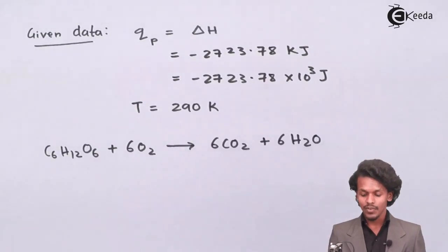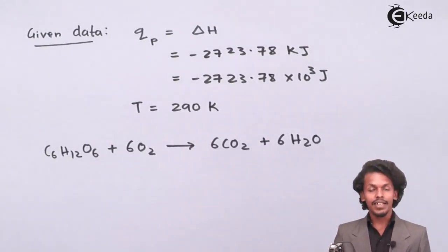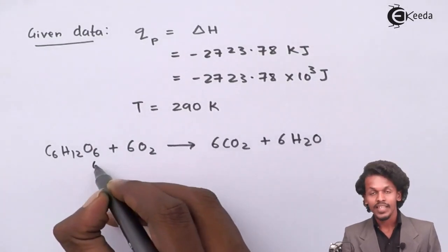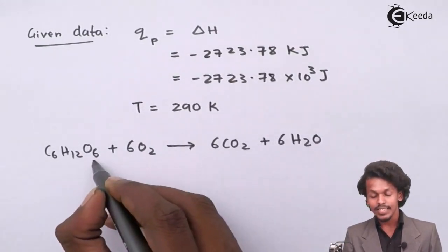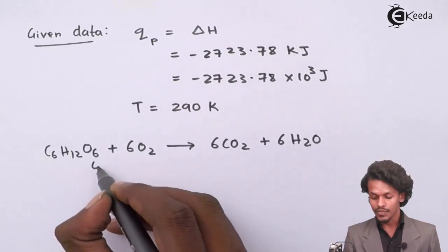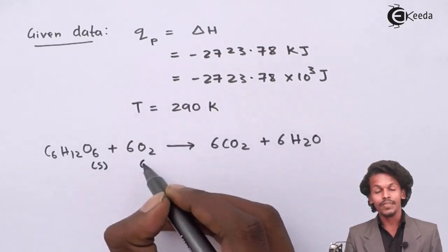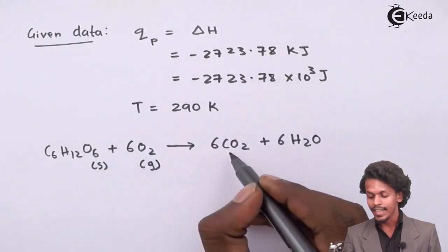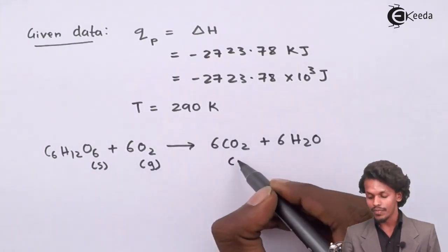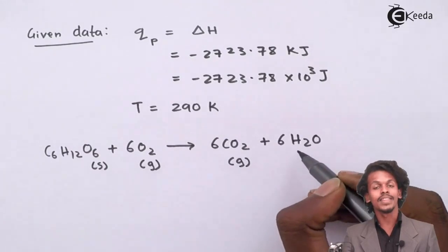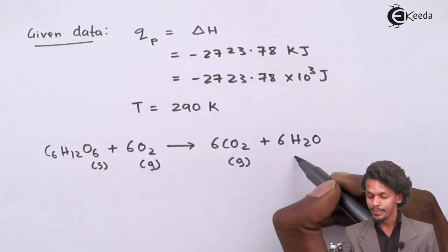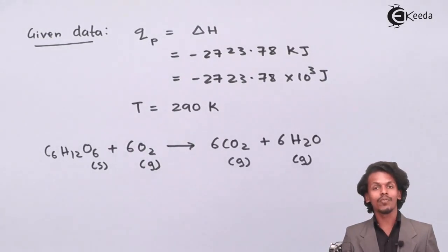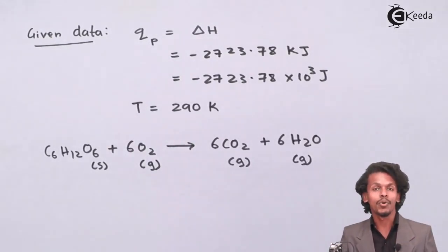Regarding the states: glucose is in the solid state, oxygen is in the gaseous state, carbon dioxide is in the gaseous state, and H2O in this case also appears to be in the gaseous state. From these states, we can calculate the change in number of moles.